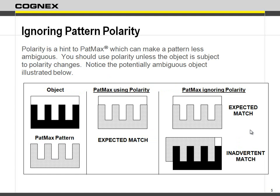Be careful - ignoring polarity can give you some erroneous results because you are increasing its tolerance. By increasing the tolerance, you can have some stuff slip in. In this case I have an object that kind of looks like a comb. If I'm using polarity then it's always looking for something darker on a light background that looks like the object I trained, but if I say ignore polarity I can still pick up the expected match.